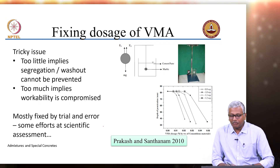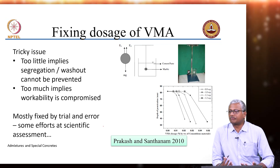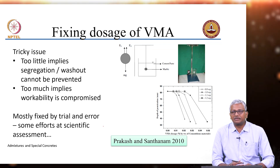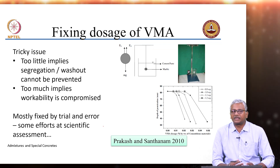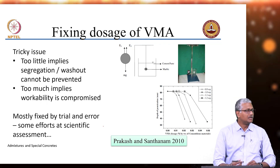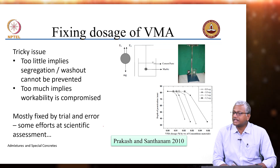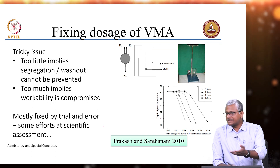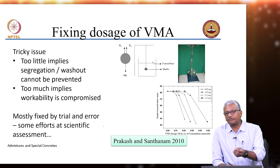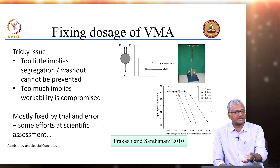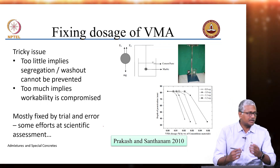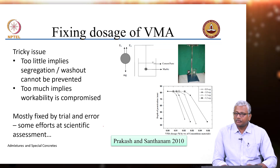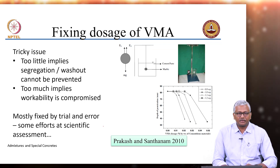We had done some work about how one could fix the dosage of VMA. In the case of super plasticizer, it was easy to use a marsh cone test and look at the saturation usage as a good starting point. But what about VMA? If you add too little of it, it is not going to work. If you add too much of it, it causes excessive retardation, it is likely to reduce your strength, and it is going to compromise your workability as well.